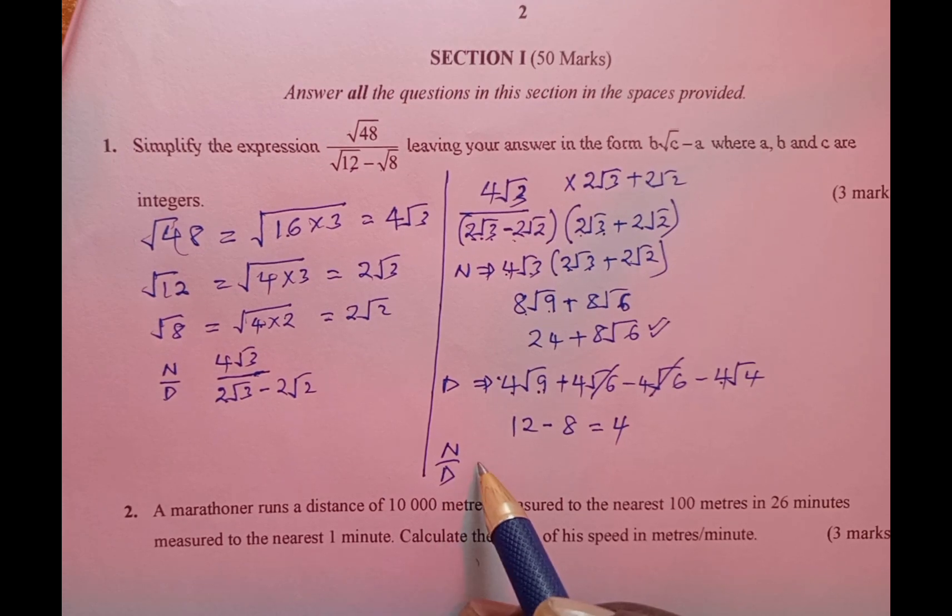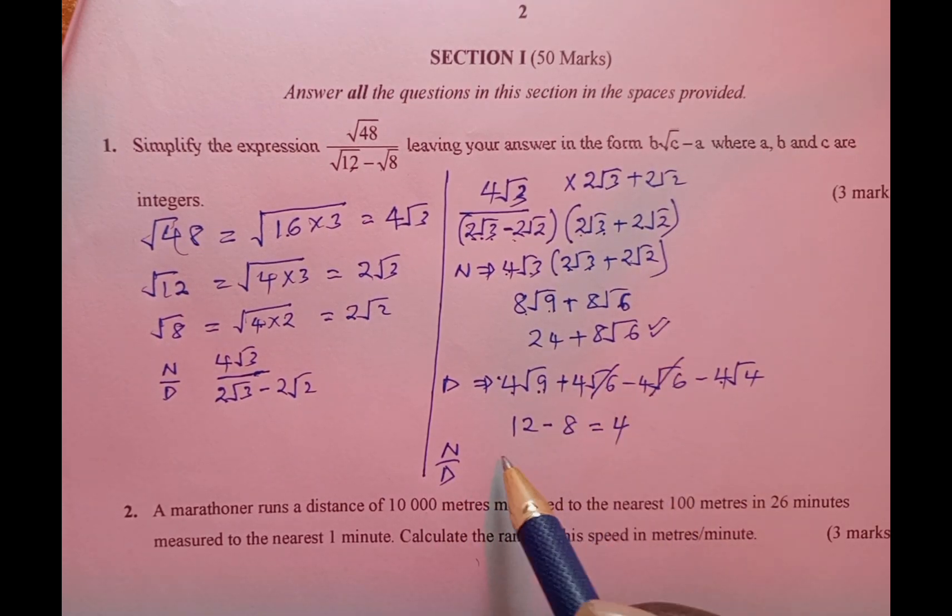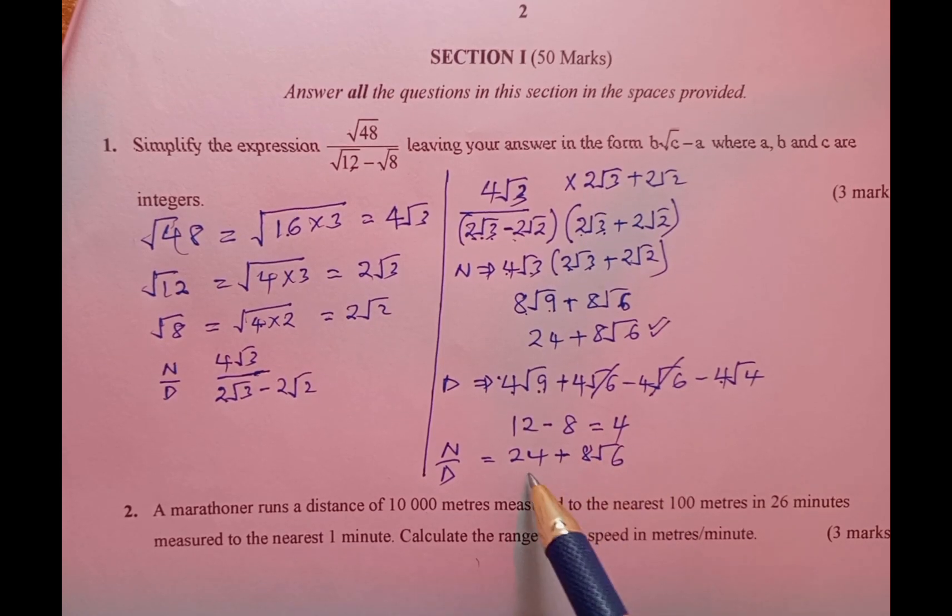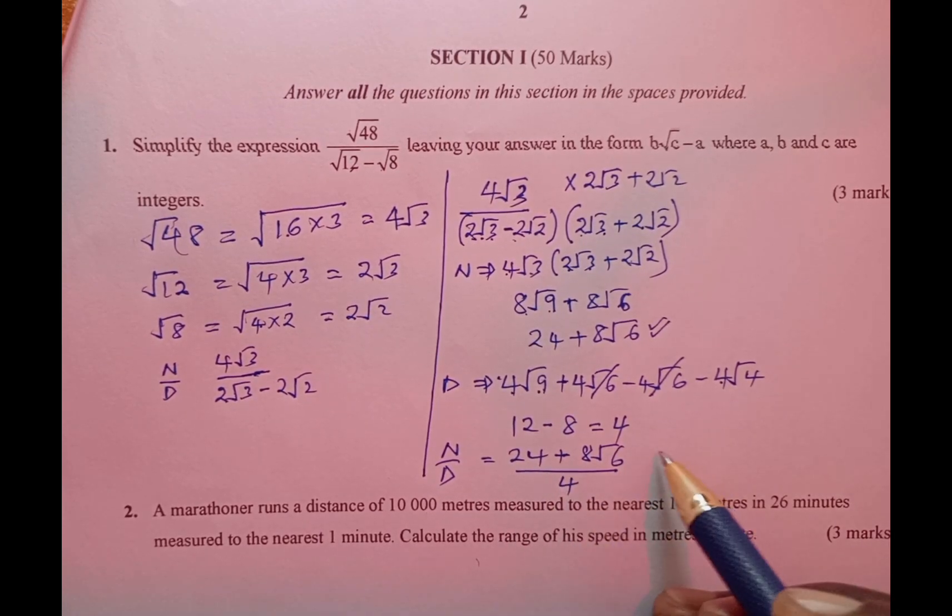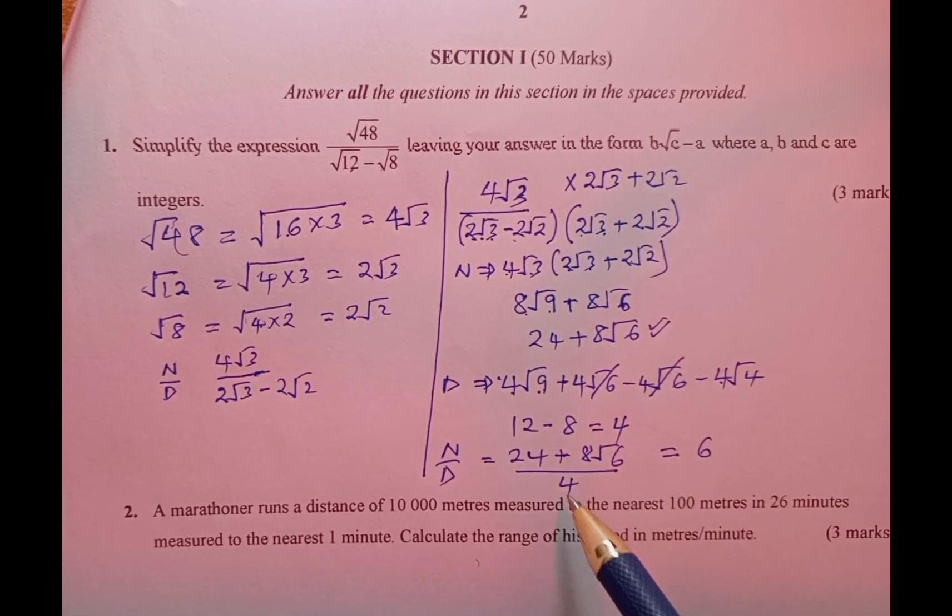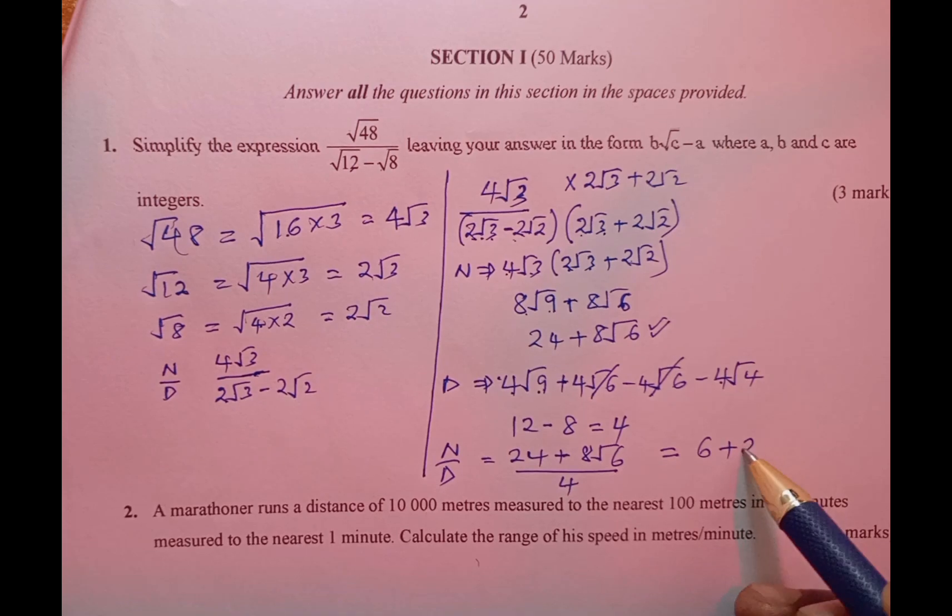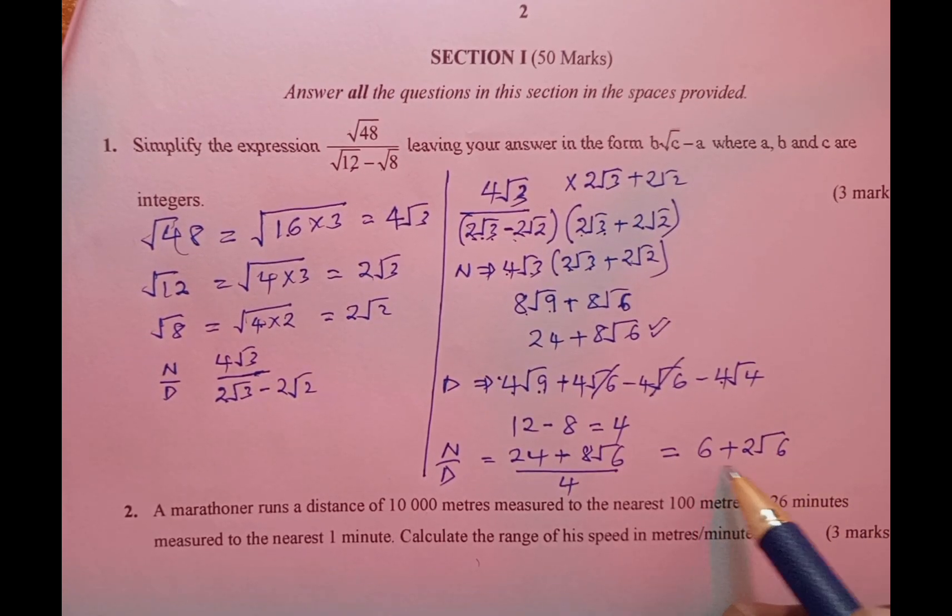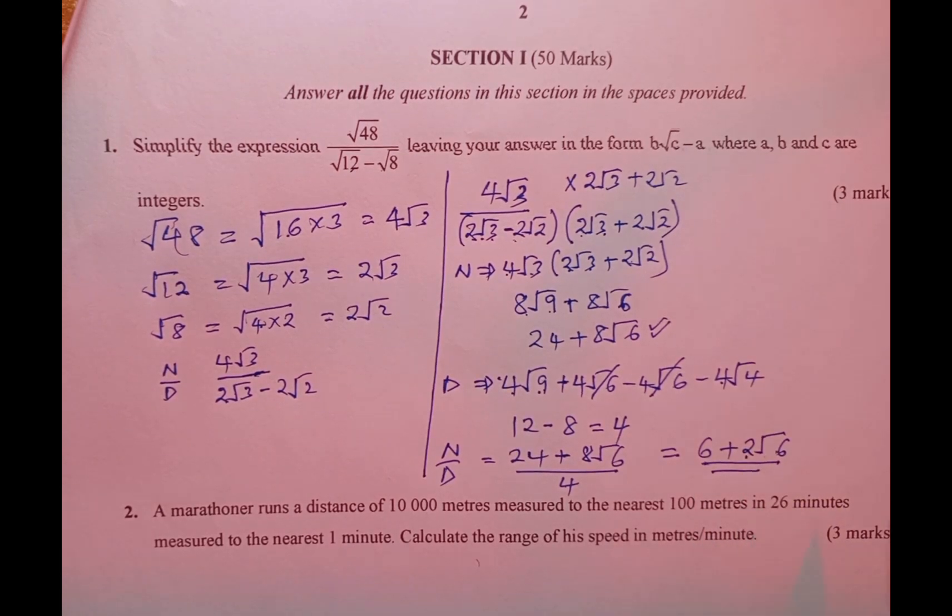Now joining the numerator over the denominator, we have 24 plus 8√6 divided by 4. The final answer is going to be 6 plus 2√6, and this becomes the answer to this particular question.